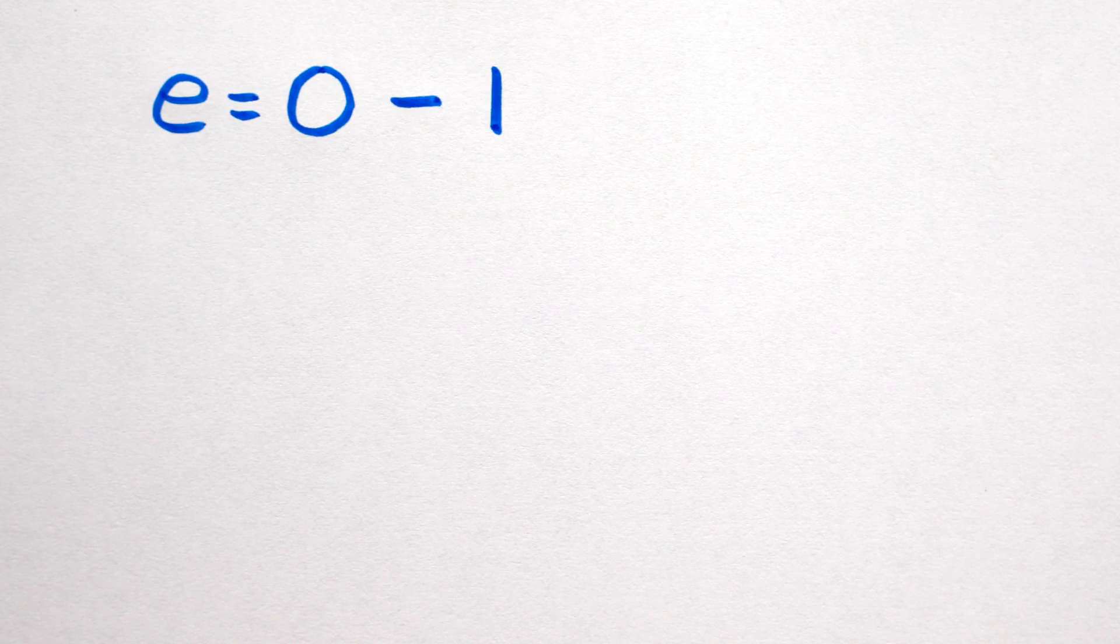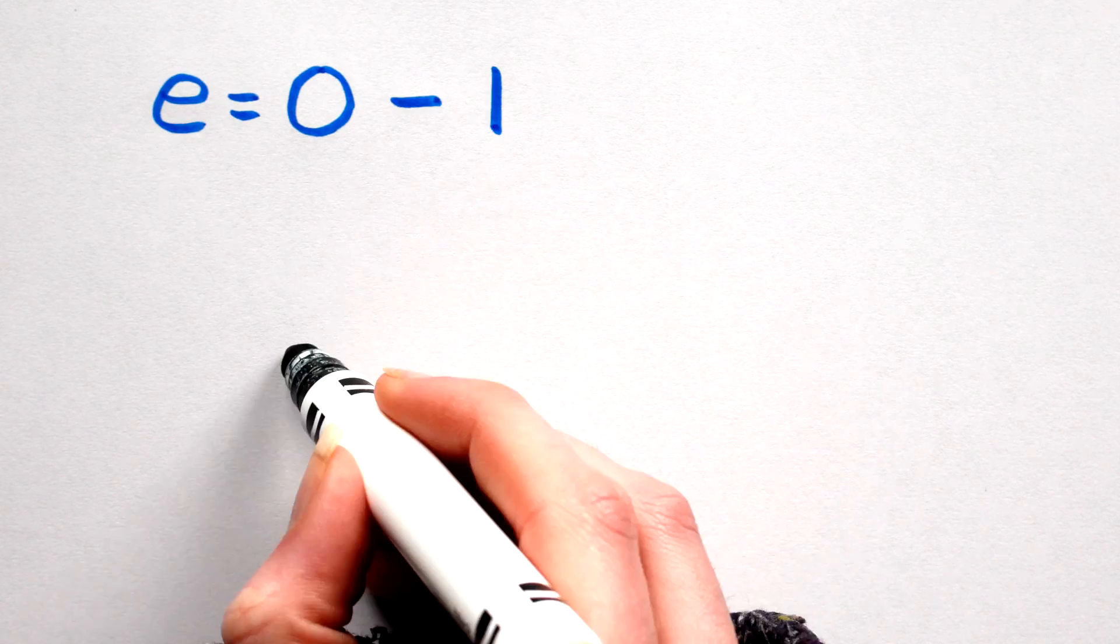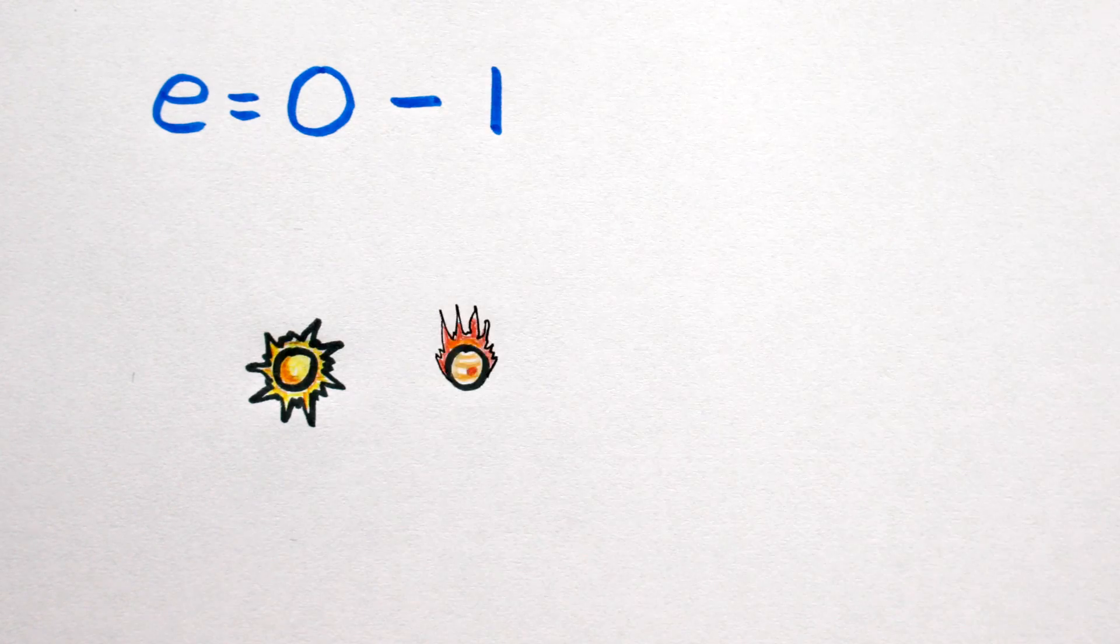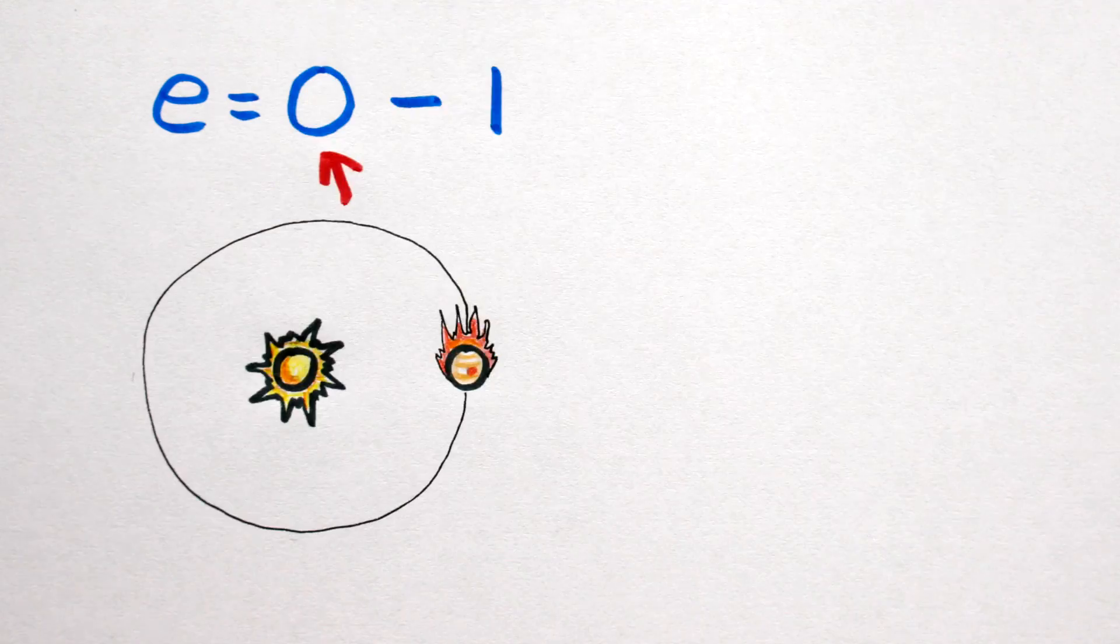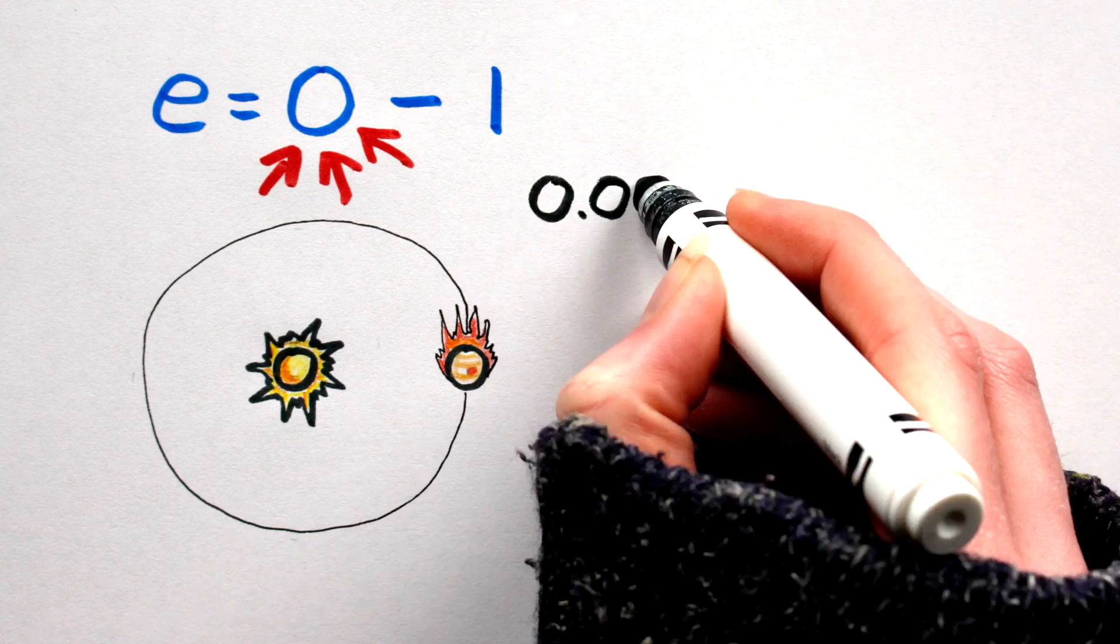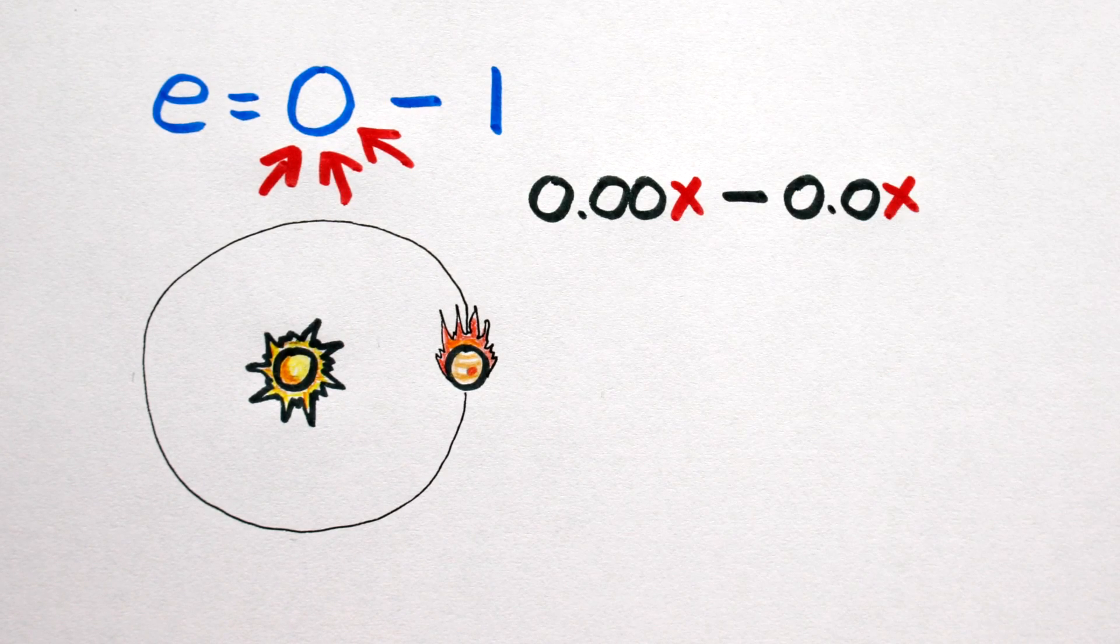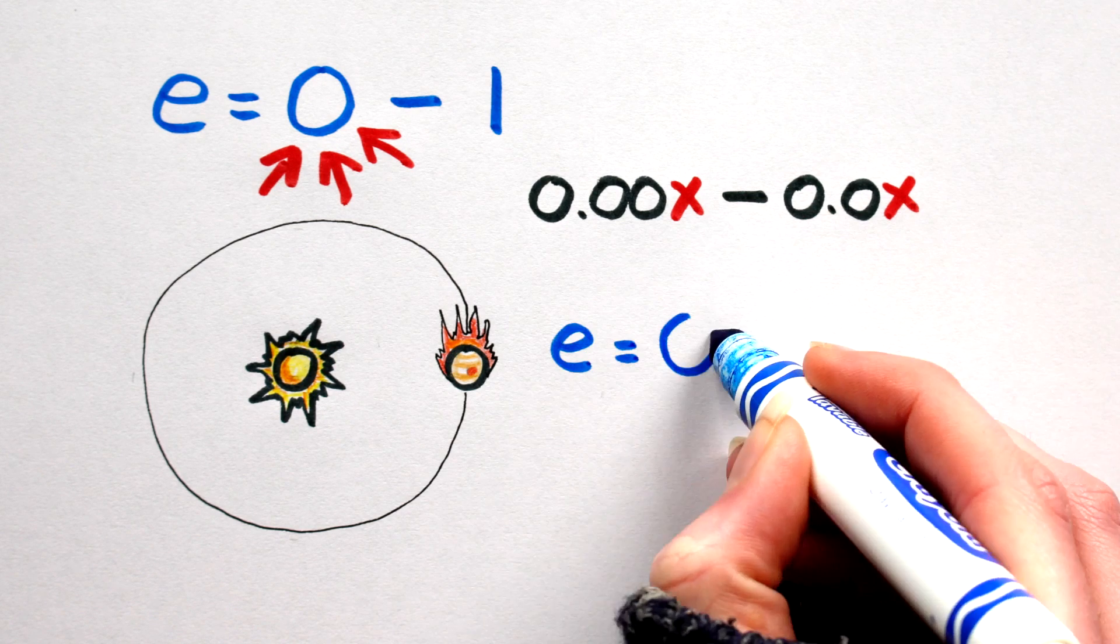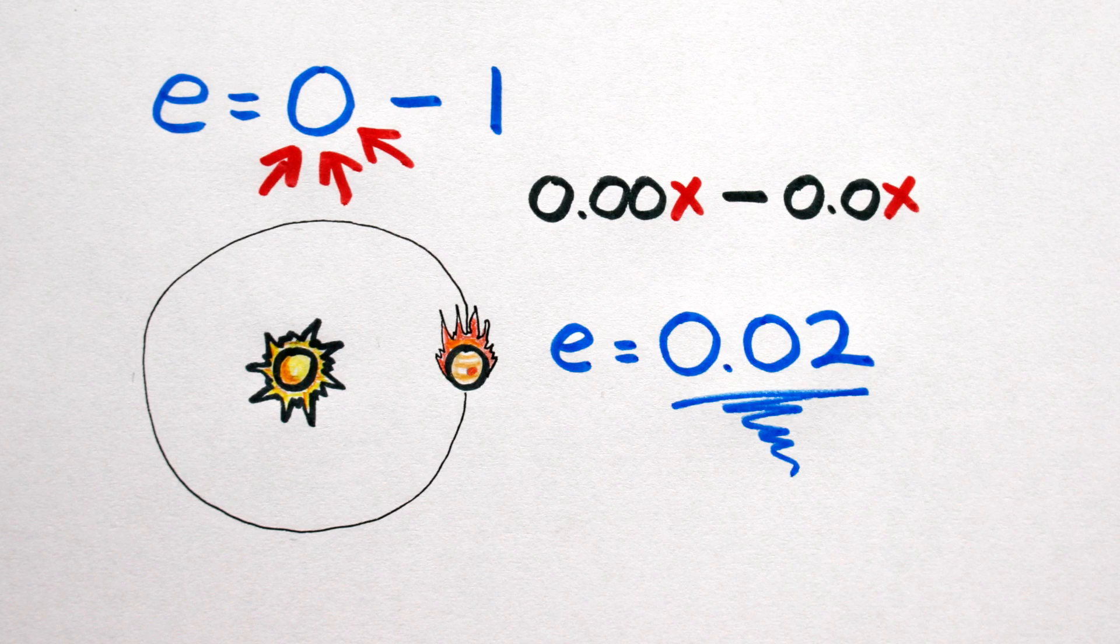Eccentricity. Orbital eccentricity values go from 0 to 1. Hot Jupiters have very circular orbits, so our eccentricity needs to be extremely close to 0 without actually being 0. In general, 0 with 1 to 2 zeros after the decimal point is a good ballpark. I'll go with an orbital eccentricity of 0.02.